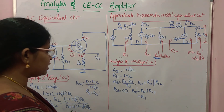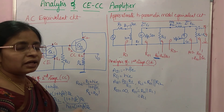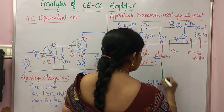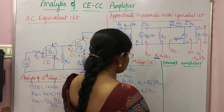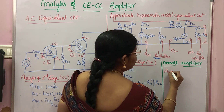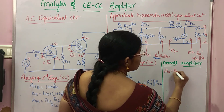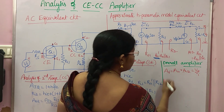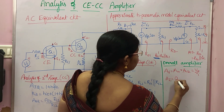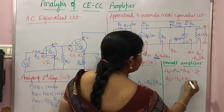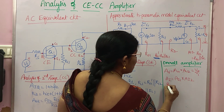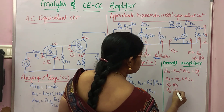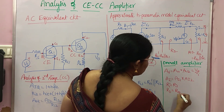Now moving to the overall parameters. The overall voltage gain AV = AV1 × AV2, which equals V0 / VI. The overall current gain AI = AI1 × AI2. The overall input resistance RI = RI1. The overall output resistance R0 = R02-dash.